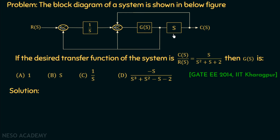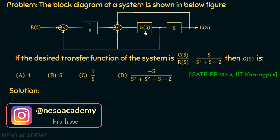If we observe this block diagram representation, we are given 3 blocks in the forward path. The gain of the first block is 1/s, the second block is G(s), and the third block is s. There are two adders — a 2-input adder and a 3-input adder. There is a takeoff point taken from the output of block s given as input to one adder, and another takeoff point taken from the output of block G(s) given as input to both adders. The reference input is R(s), the final output is C(s), and the overall transfer function C(s)/R(s) equals s over s squared plus s plus 2.